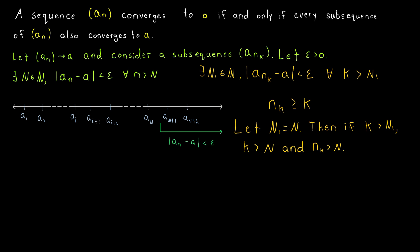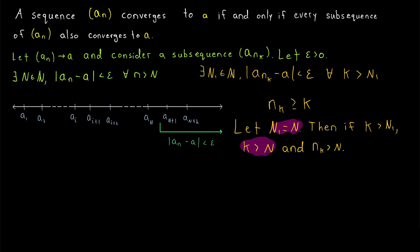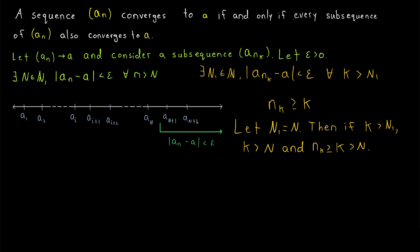Making use of this property, we know that if we let big N₁ equal our original big N, then if k > N₁, that means k > N, and thus nₖ > N — because nₖ ≥ k. If we go k terms along in our subsequence, we have to be at least k terms along in the original sequence, and k is greater than N. So if k > N₁, then nₖ > N. This is what we wanted to prove.